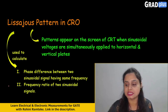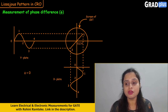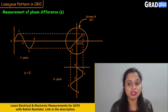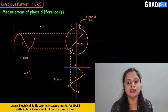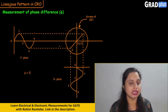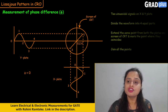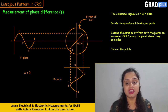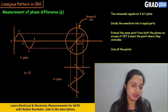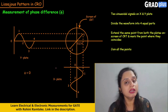Let us see how we calculate the phase difference and then the frequency. For calculating the phase difference, on both plates we are giving sinusoidal waveforms. You can see this is your X plate and this is your Y plate, with sinusoidal waveforms on both. The first step is to divide that waveform into equal parts on both the horizontal and vertical plates.